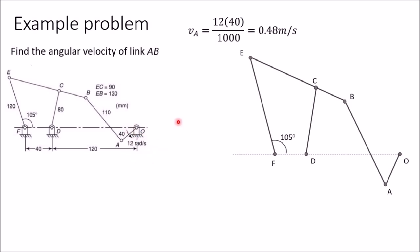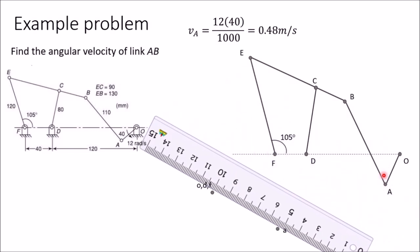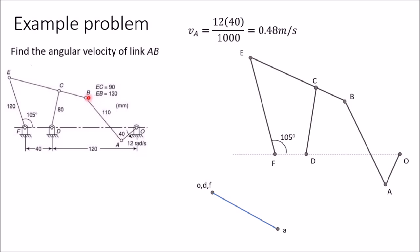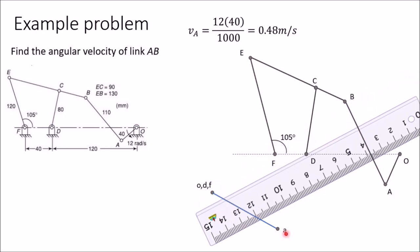In the relative velocity method, first mark all fixed points O, D, and F together at one place using small letters. Draw a line perpendicular to OA with length 4.8 cm (using a scale of 1 cm = 0.1 m/s) — this represents the velocity of A with respect to O. Next, since A is connected to B, draw a line from point A perpendicular to AB to represent the velocity of B with respect to A.